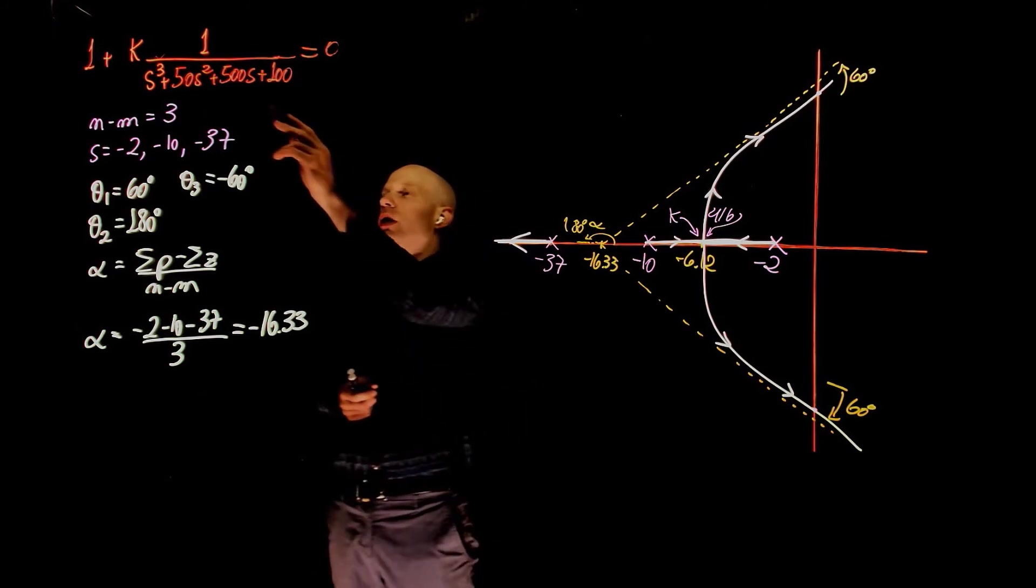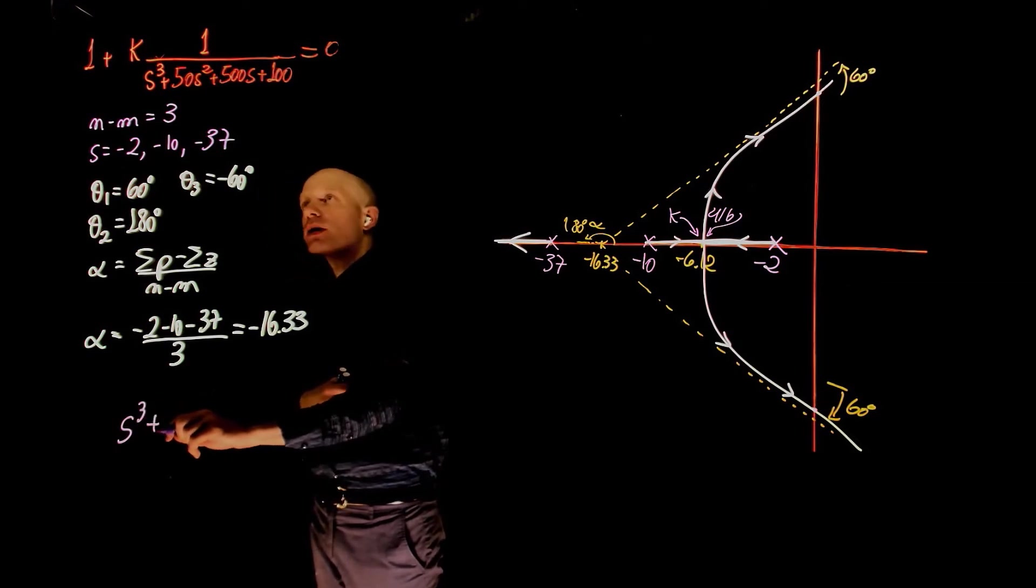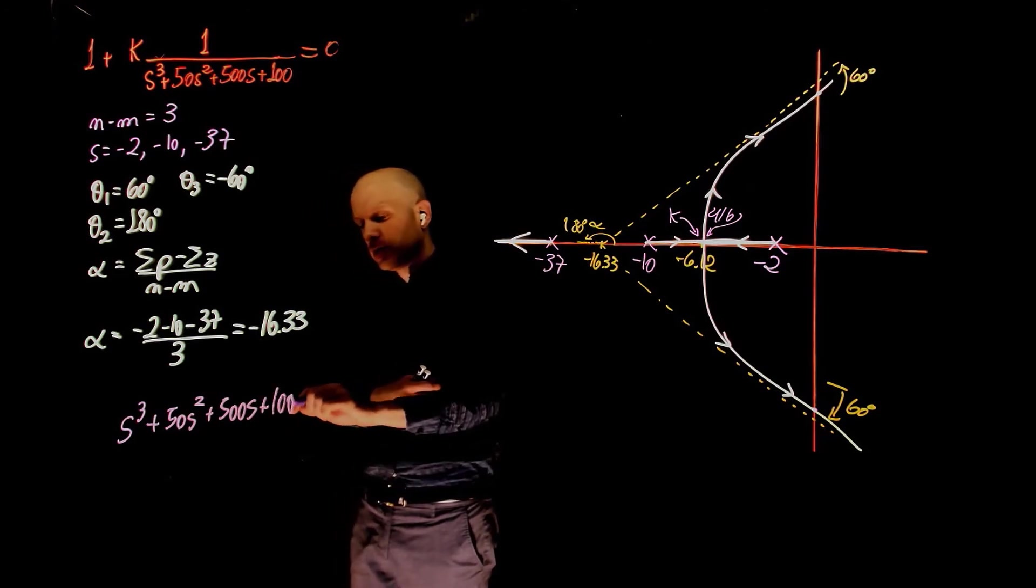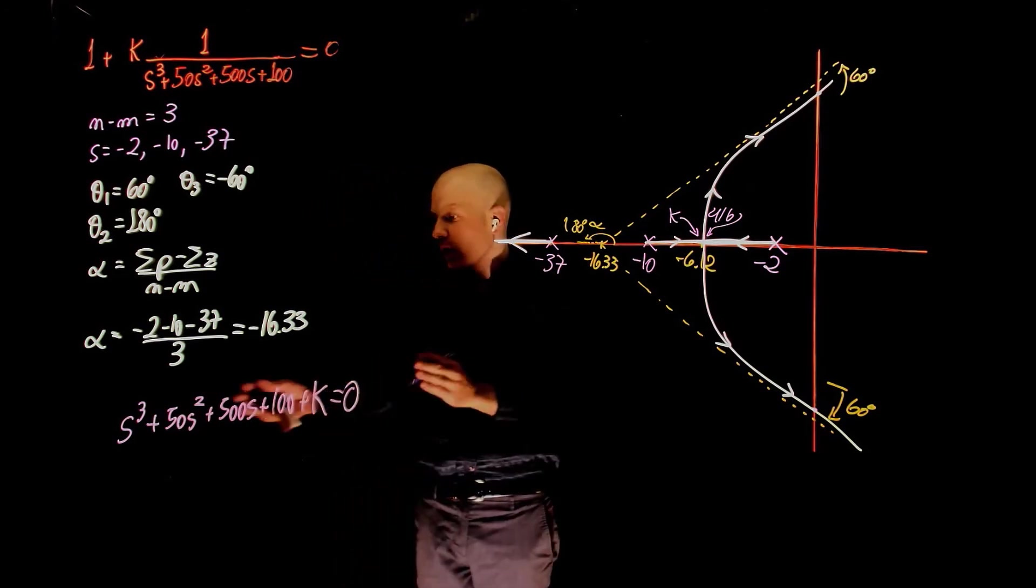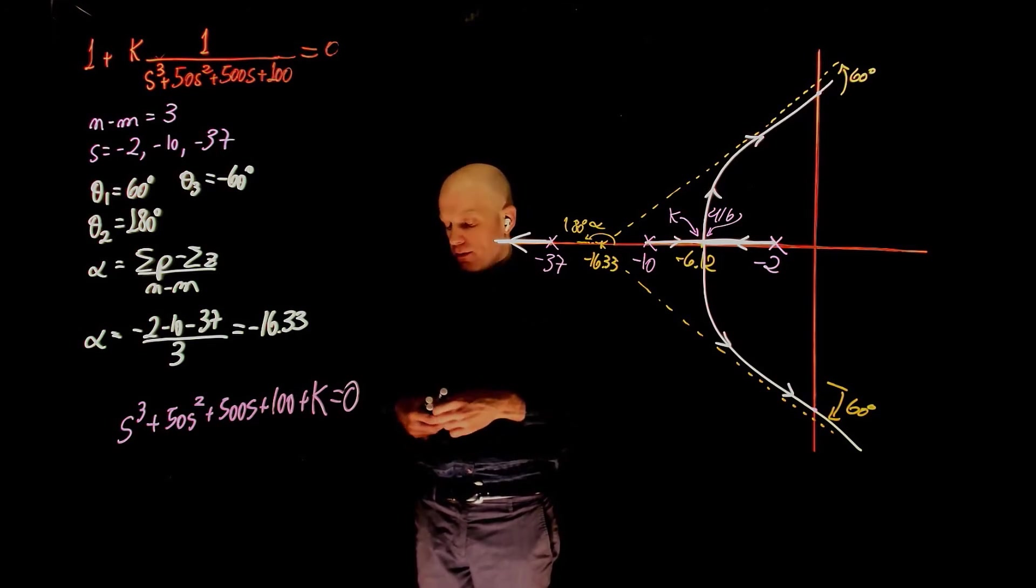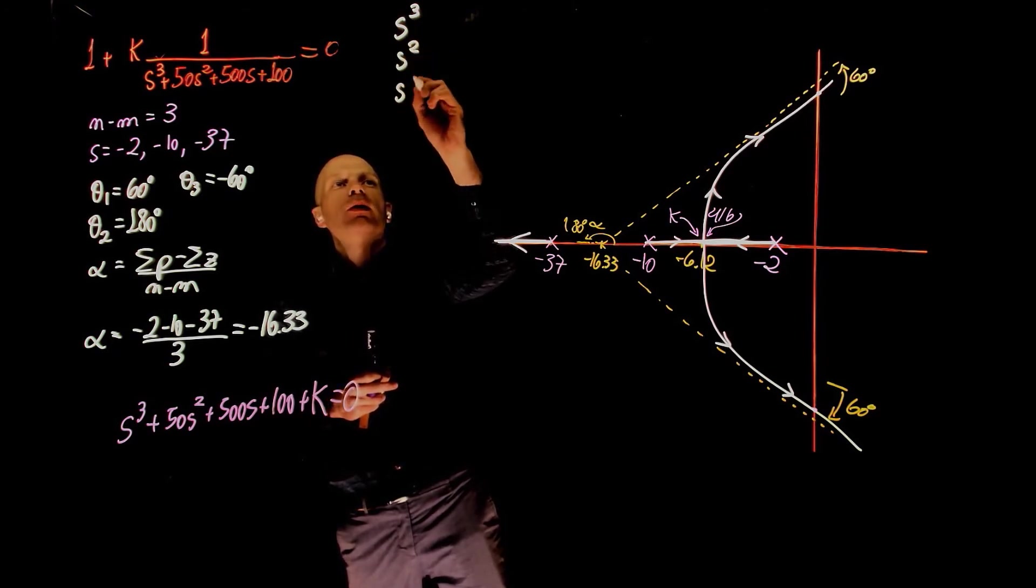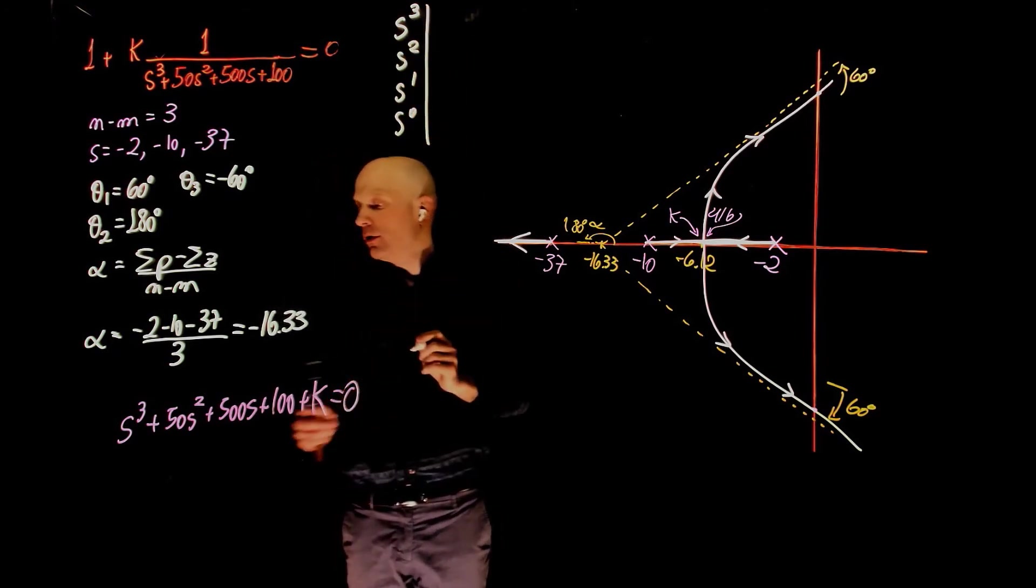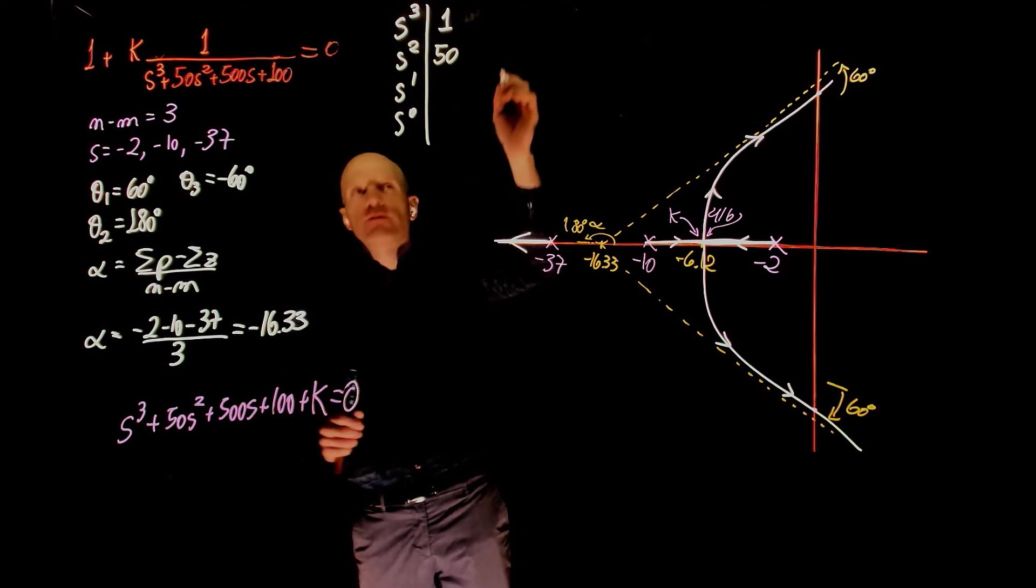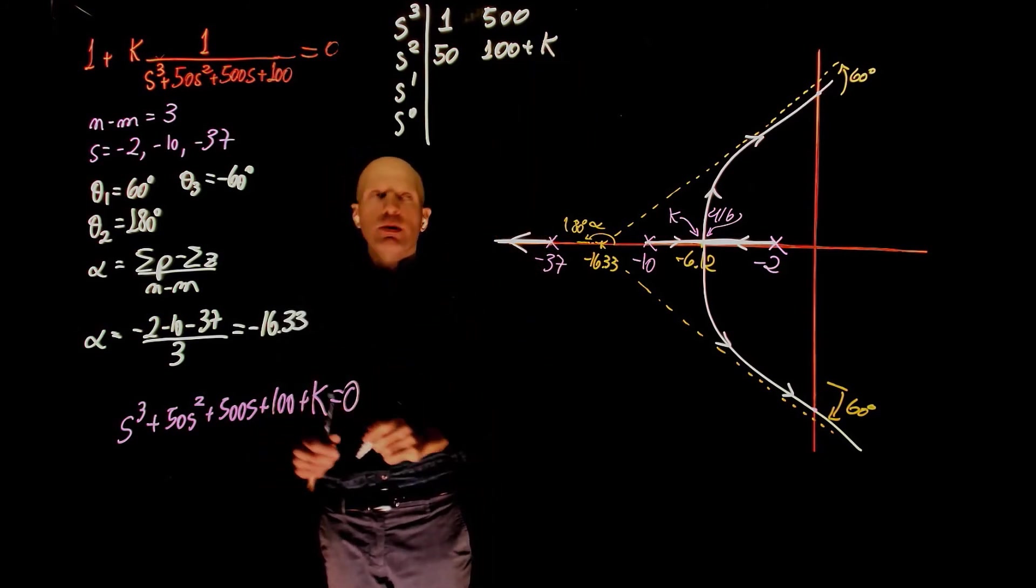To use the Routh-Hurwitz stability criterion, we need to rearrange this expression. This can be rearranged as s to the power of 3 plus 50s squared plus 500s plus 100 plus k equals 0. Now that we have the expression in this form, which again is the characteristic equation, we can build the Routh-Hurwitz array. Starting with s to the power of 3 and going down to s to the power of 0. The first coefficient is 1, the second one is 50, 500, 100 plus k is the coefficient of s to the power of 0.